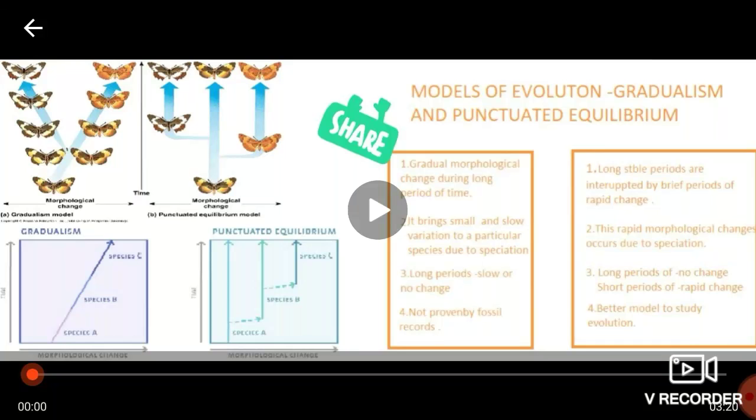And in case of punctuated equilibrium, long stable periods are interrupted by brief periods of rapid change and this rapid morphological change is due to speciation. So the long period there is no change but suddenly short periods causes rapid change which leads to the formation of completely new species and this model is better to study the evolution.